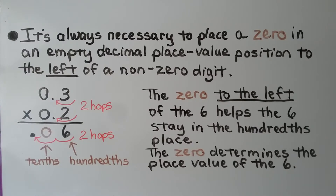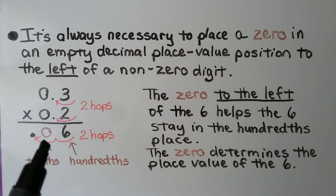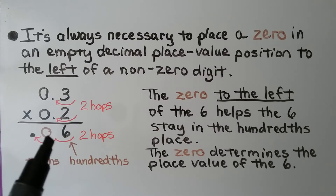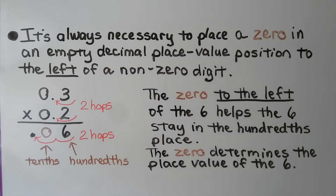It's always necessary to place a 0 in an empty decimal place value position to the left of a non-zero digit. This is a non-zero digit — it's not a 0. We put this 0 here as a placeholder. The 0 to the left of the 6 helps the 6 stay in the hundredths place. The 0 determines the place value of the 6.